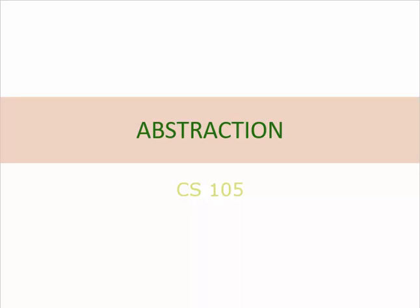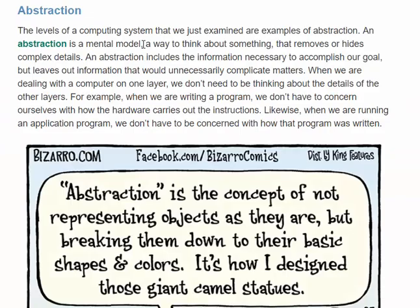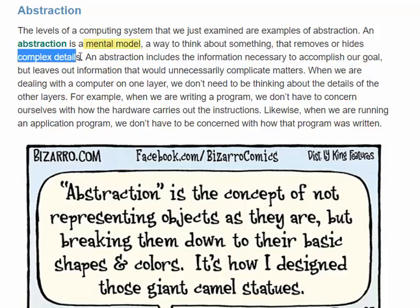Chapter 1 introduces the concept of abstraction. Abstraction is one of the big ideas in computer science and you're going to see examples of abstraction throughout the textbook. We use abstraction to help us simplify things and to make it easier for us to write our computer programs. Here is the textbook definition: it is a mental model, a way to think about something, and it removes or hides complex detail.